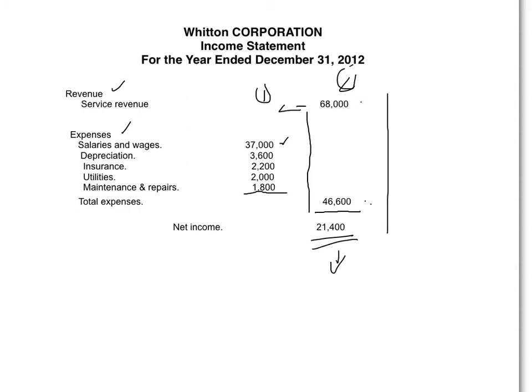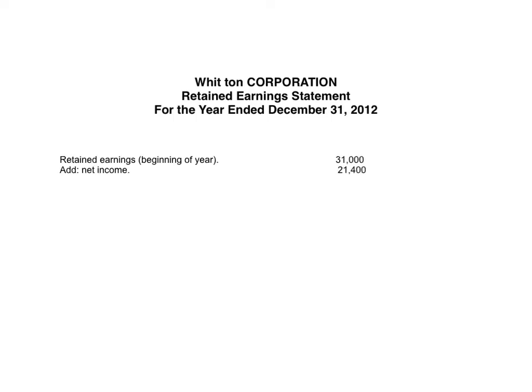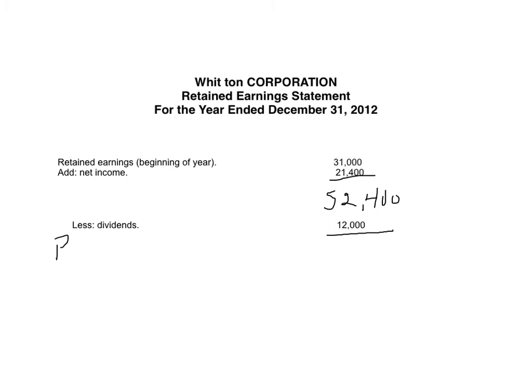Net income goes to the common shareholders, and the statement for them is the retained earnings statement, which we do next. The retained earnings statement is also a time period statement for Witten. We look at what the earnings were at the beginning of the year, plus what we earned during the year, minus what we paid to shareholders as dividends. We take retained earnings at the beginning of the year, $31,000, add net income of $21,400, giving us $52,400. Now we subtract dividends of $12,000.